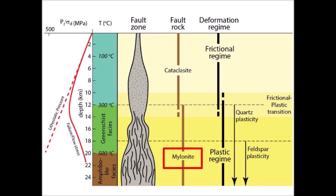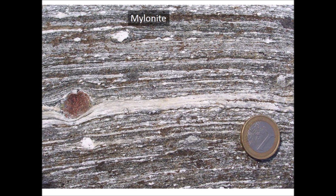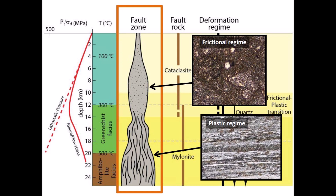Mylonite is given as an example of the rocks formed under the plastic regime. Mylonite is a fine-grained rock produced by dynamic recrystallization of the constituent minerals, resulting in a reduction of the grain size of the rock. Mylonites can have many different mineralogical compositions; it is a classification based on the textural appearance of the rock. In the frictional regime, the rocks in the fault zone are typically granular as the minerals break by contact with each other. But in the plastic regime, the rocks in the fault zone are typically striated as the minerals melt and recrystallize under high temperature and high lithostatic pressure.